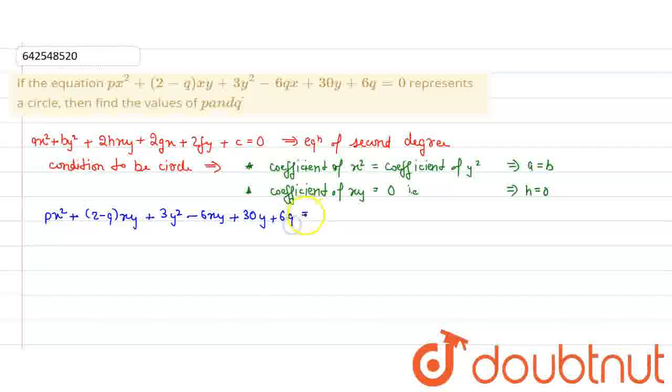Now if we compare this equation with the general equation, we get p = 3. The coefficient of x² should equal the coefficient of y², which means we got p = 3.